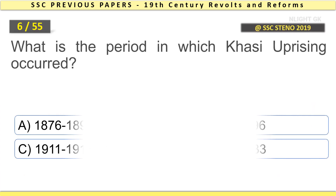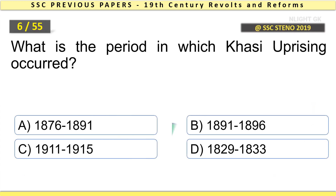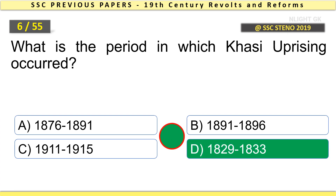What is the period in which the Khasi Uprising occurred? Between the years 1829 and 1833.